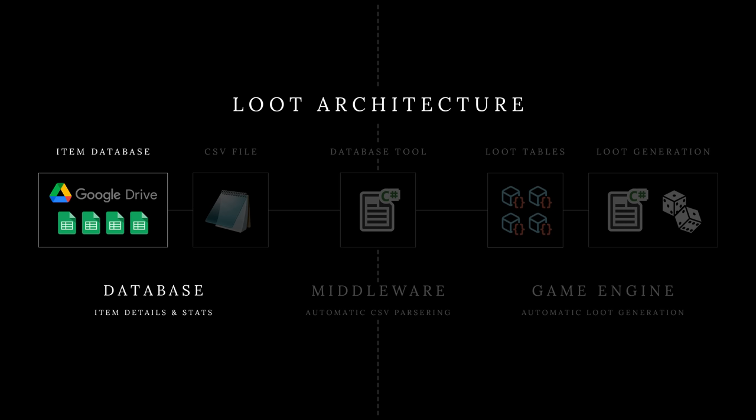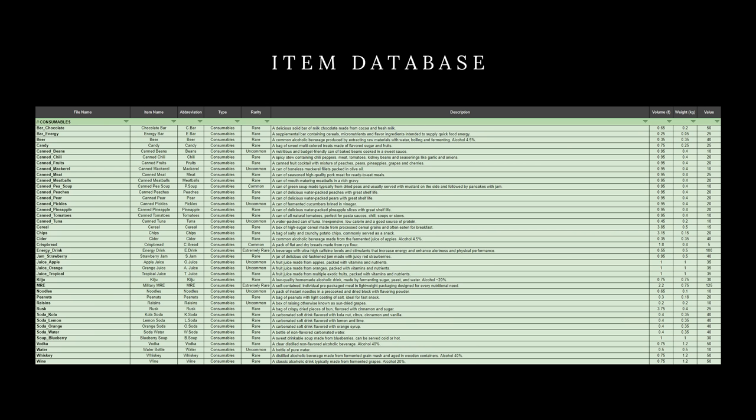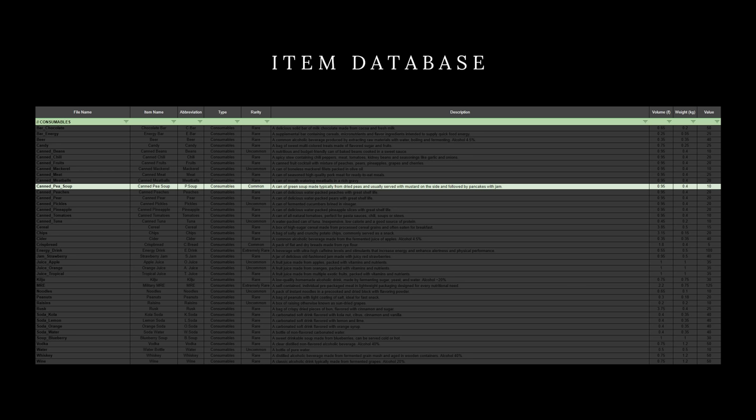The first phase is a cloud service or server and the item database located there. I personally use Google Drive, but the service provider itself does not matter. The purpose of these databases is to store all data related to items. The main reason databases are used is the ability to edit data quickly and externally without a game engine. The database category consumables contains our target item, canned pea soup, with data fields such as file name, item name, abbreviation, item type, rarity level, item description, and item stats like volume, weight, and trading value.